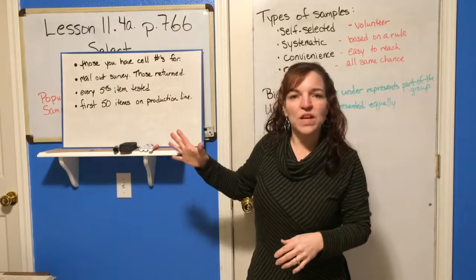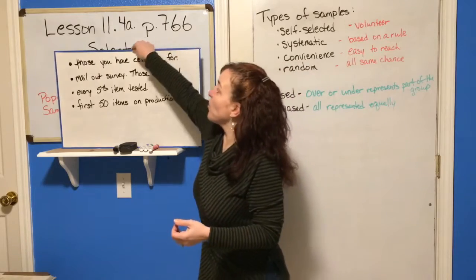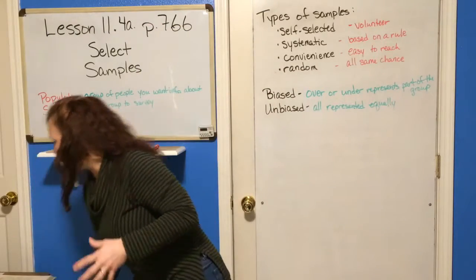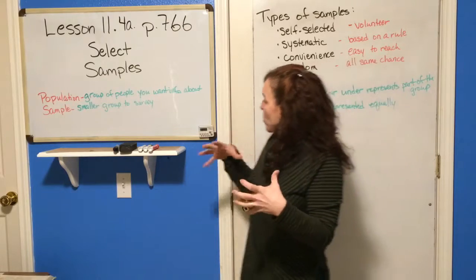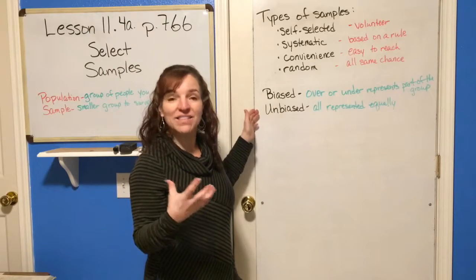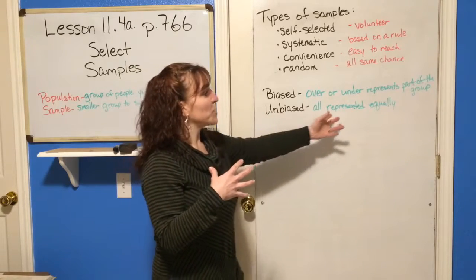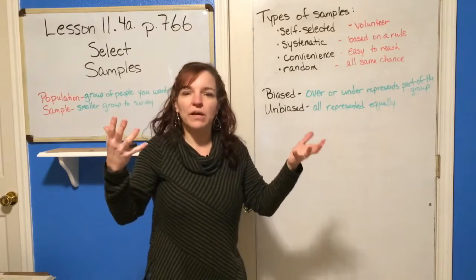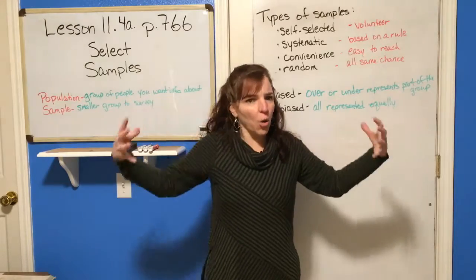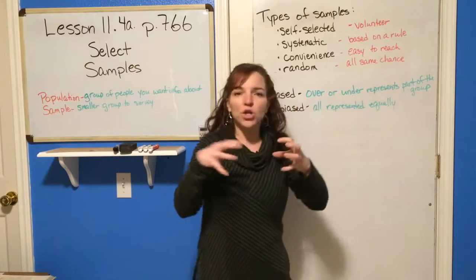None of these are bad samples — these are just the different types, the different ways that you can collect your sample and get a group of people or items together to survey or check to get your statistics. Sometimes the information we have is biased and sometimes it is unbiased. Obviously we want an unbiased sample, where the representation is equal across the board so that it best represents the whole.